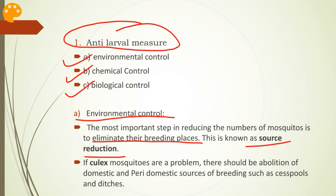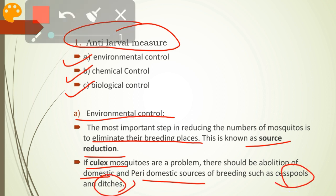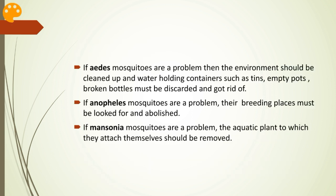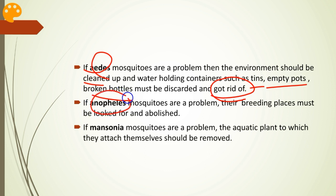If Culex mosquitoes are a problem, there should be abolition of domestic and peri-domestic sources of breeding such as cesspools and ditches. If Aedes mosquitoes are a problem, the environment must be cleaned and water-holding containers such as tins, empty pods, and broken bottles must be discarded. If Anopheles mosquitoes are a problem, their breeding places must be looked for and abolished. If Mansonia mosquitoes are a problem, the aquatic plants to which they attach themselves should be removed.